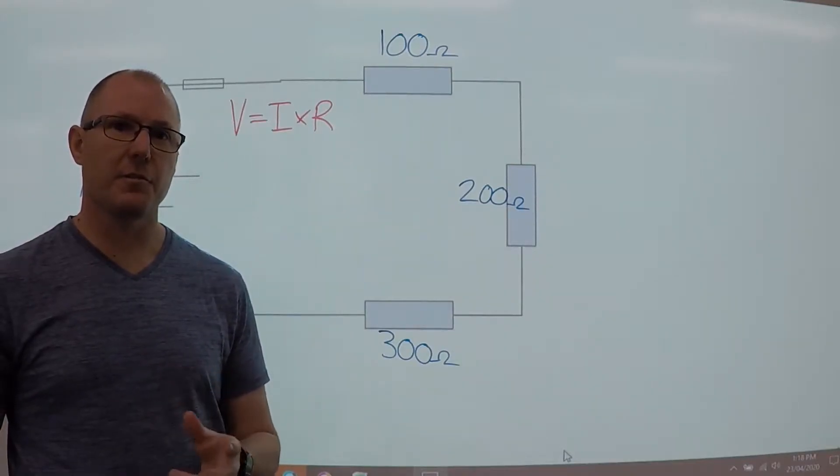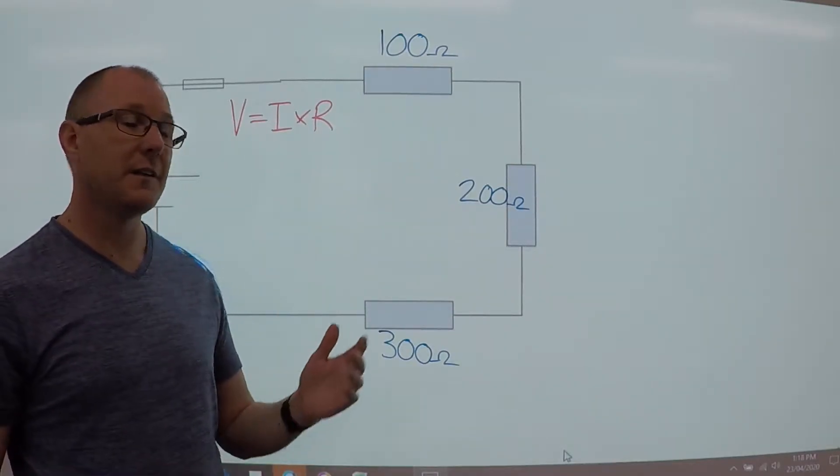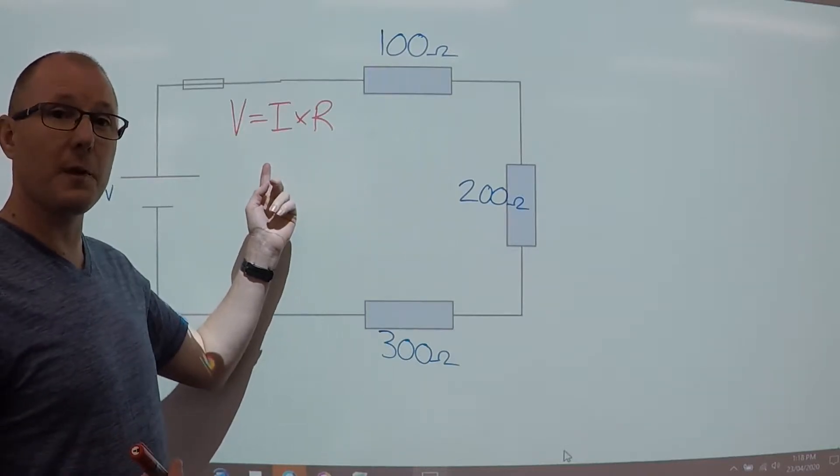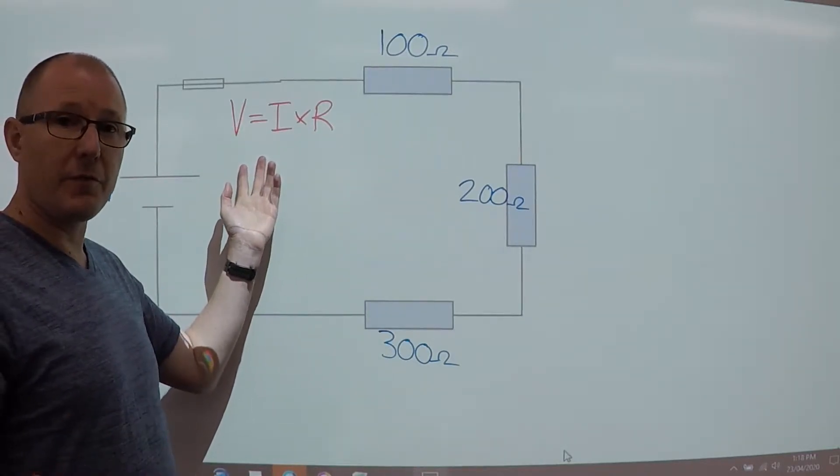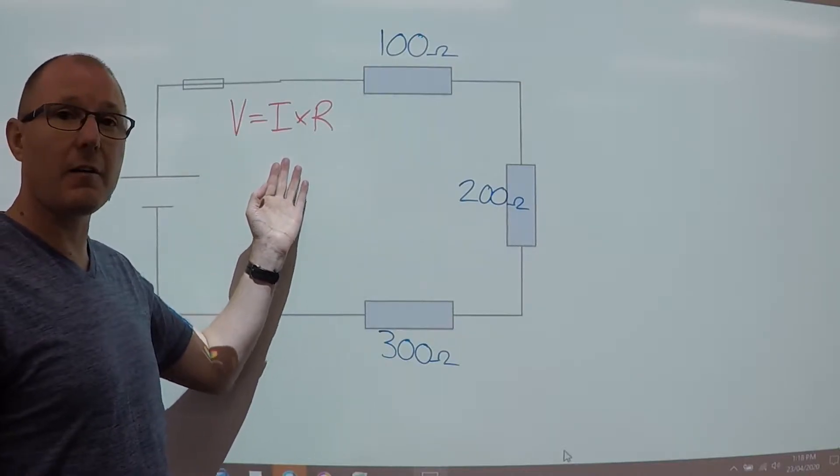Now we're going to calculate current in a series circuit. To do that, we need to transpose the base formula. V equals I times R is for when we're finding voltage, but when we have to find current, we have to transpose.